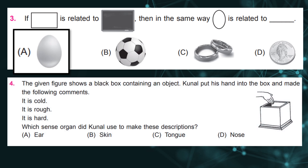The given figure shows a black box containing an object. Kunal put his hand into the box and made the following comments: it is cold, it is rough, it is hard. Which sense organ did Kunal use to make these descriptions? Answer: b, skin.